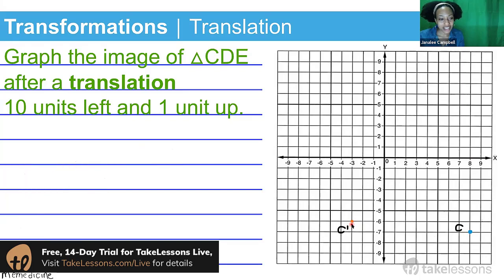Alright, so now we've shifted the position of our original point C and it's not in the same position, so we're going to name it C prime. This little apostrophe that you see right here is always given the name prime, so C prime is the shifted position of point C.